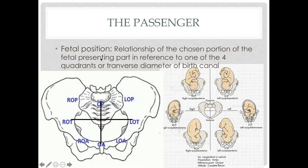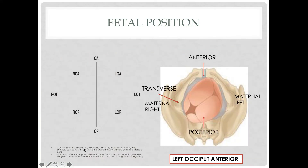Next is fetal position — the relationship of the chosen portion of the fetal presenting part in reference to one of the four quadrants or transverse diameter of the birth canal. To determine fetal position, we make four quadrants in the pelvic cavity by assuming an imaginary cross drawn over the pelvic cavity.